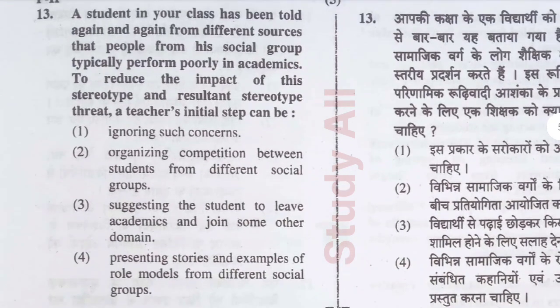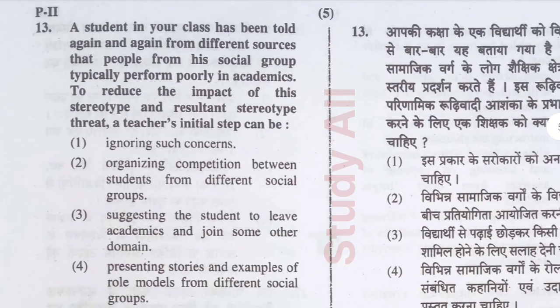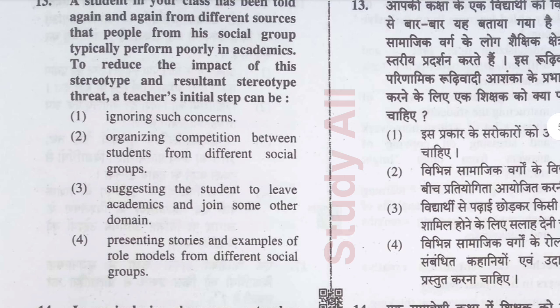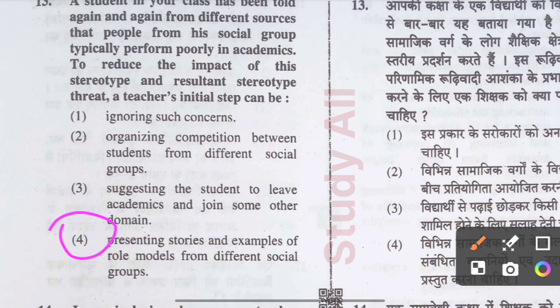Question number thirteen: A student has been told repeatedly from different sources that people from his social group typically perform poorly in academics. To reduce the impact of this stereotype threat, the correct initial step for a teacher is option four: presenting stories and examples of role models from different social groups, which helps diminish discrimination and stereotyping.